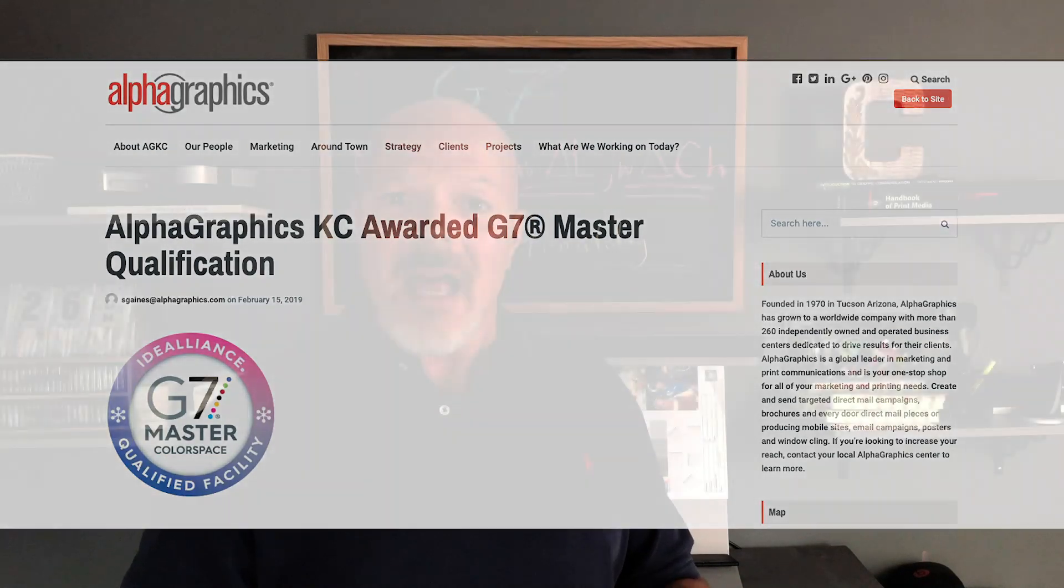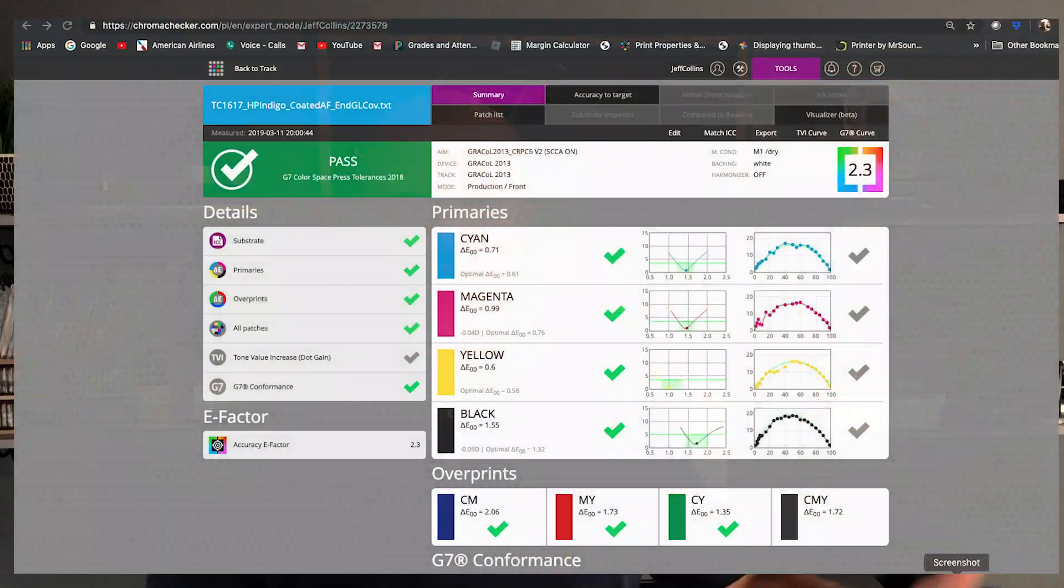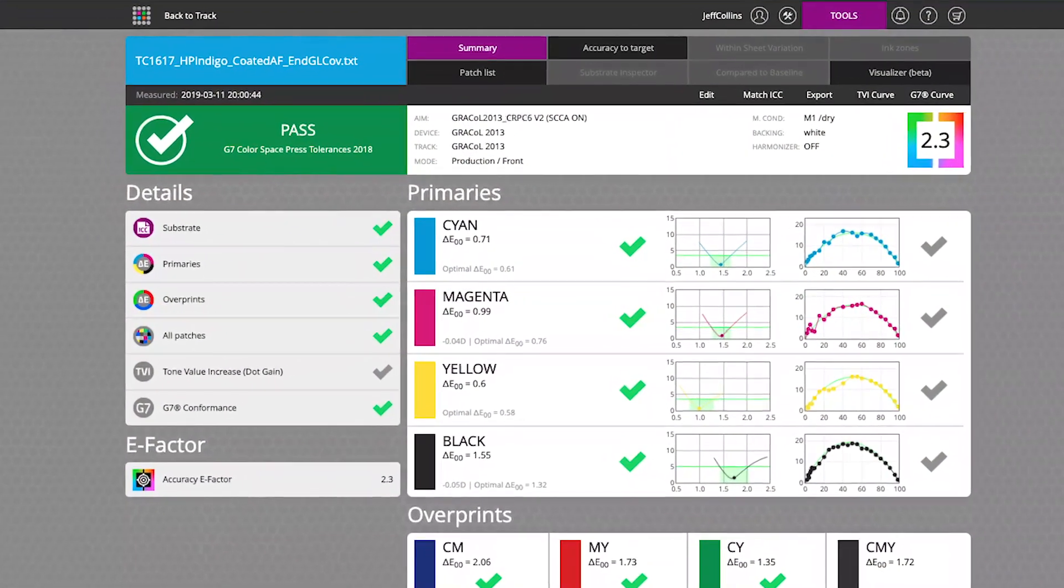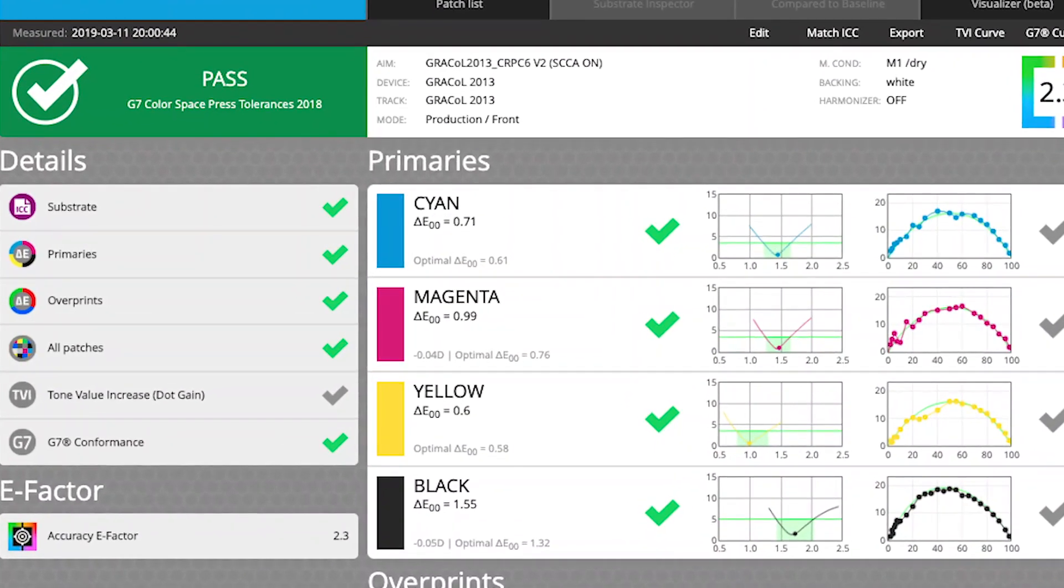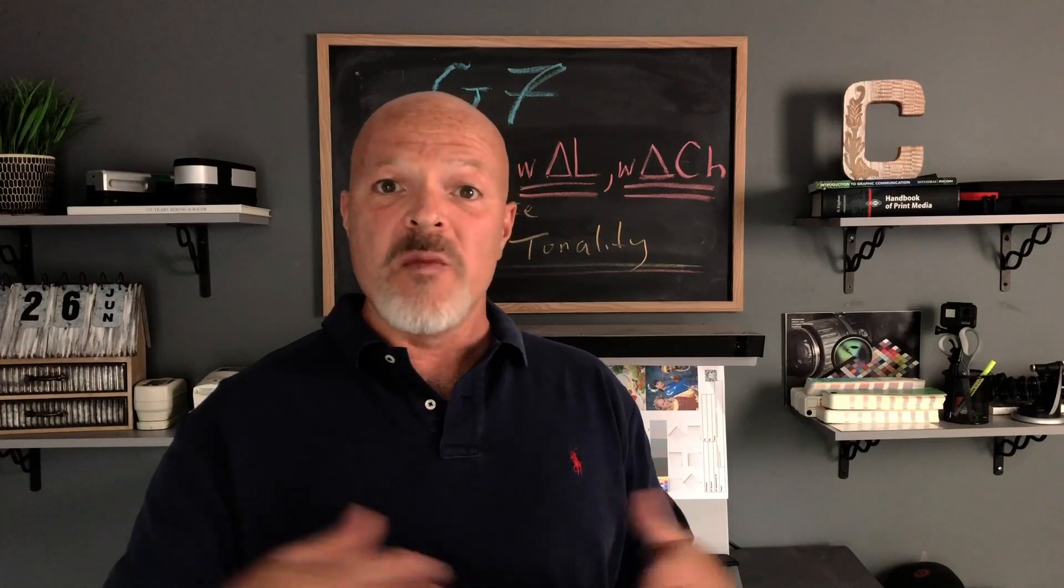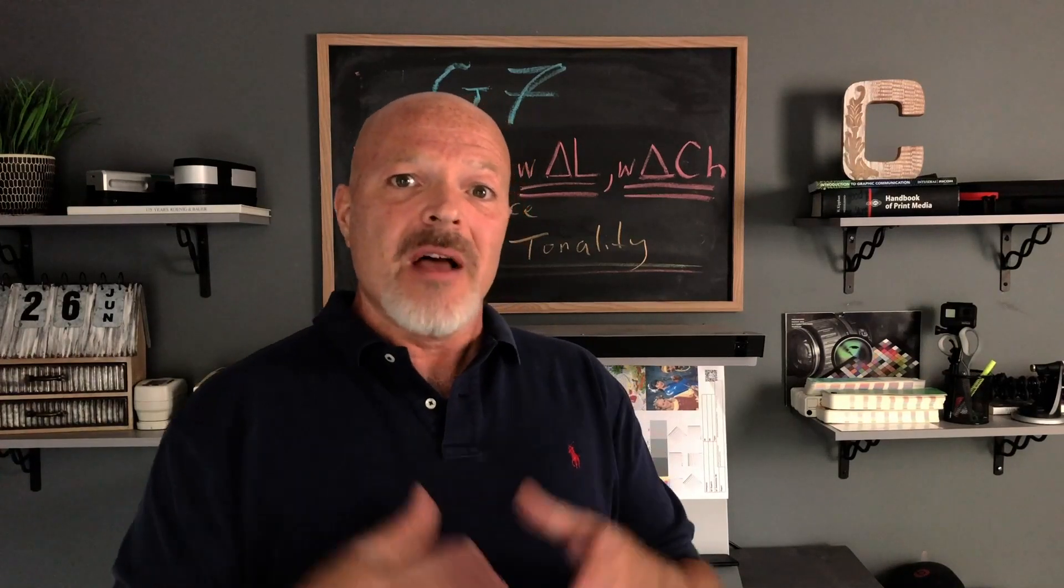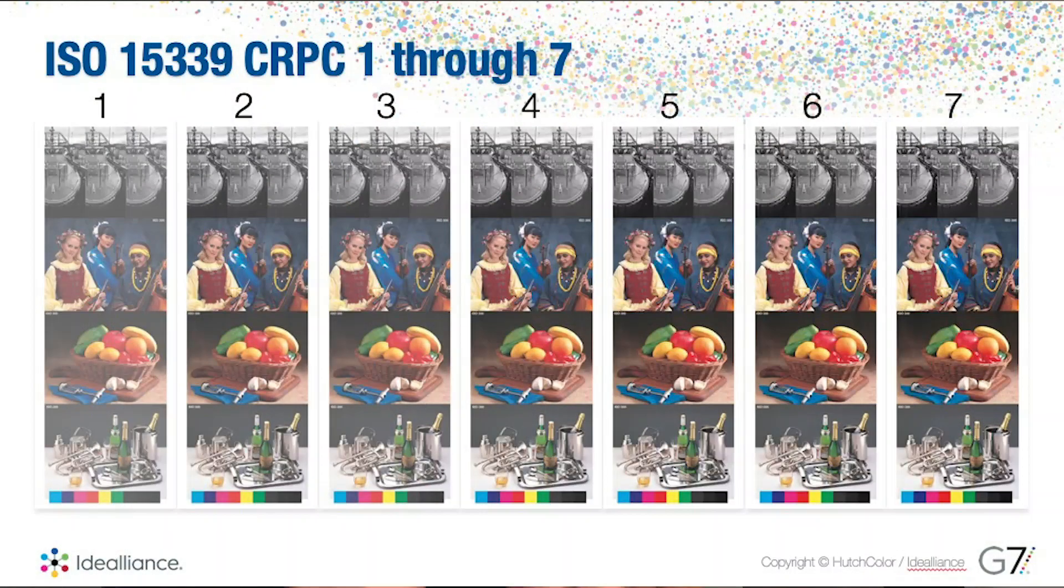Many of them use G7 as a process control aim point. This is part of their process control plan, a quality specification they shoot for, aim for, and maintain on a daily basis in order to improve consistency, in order to improve accuracy.